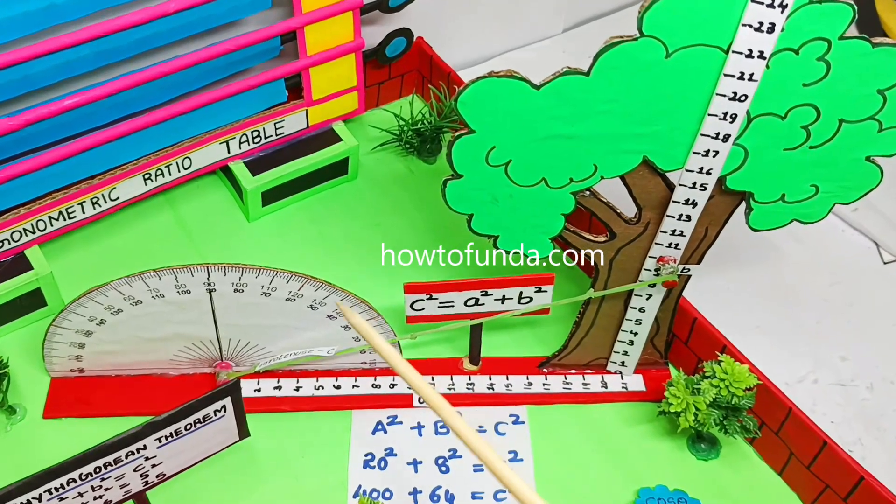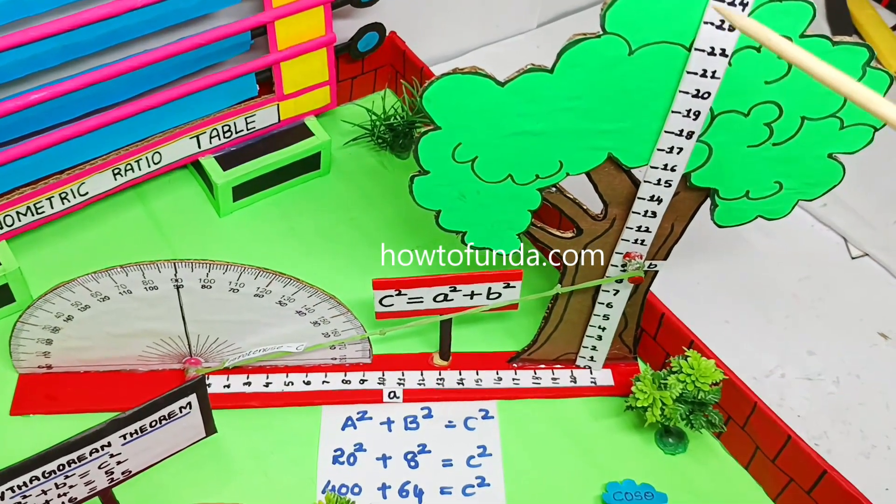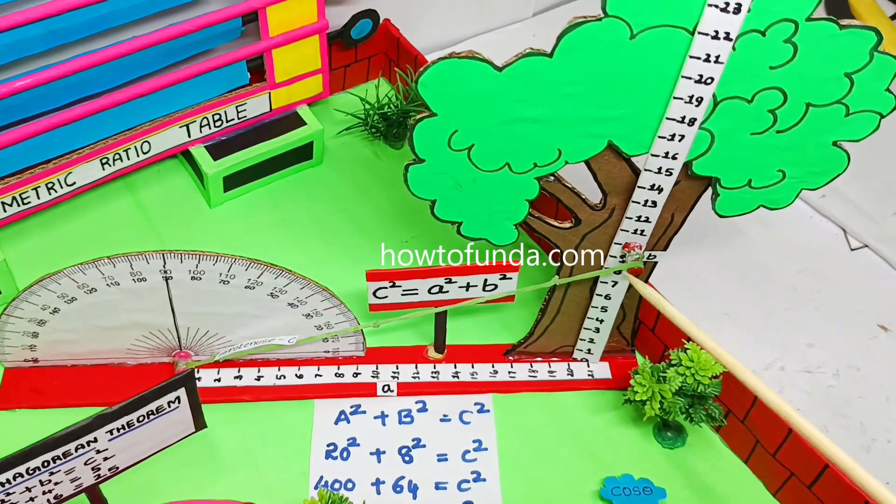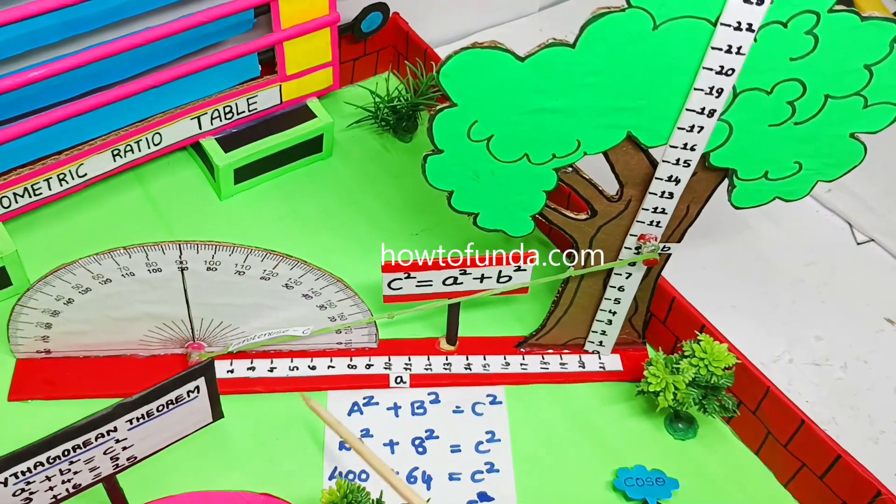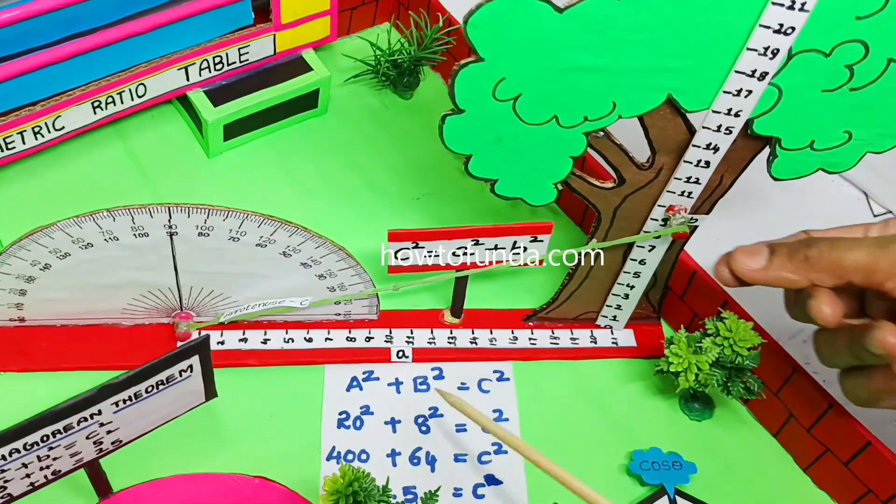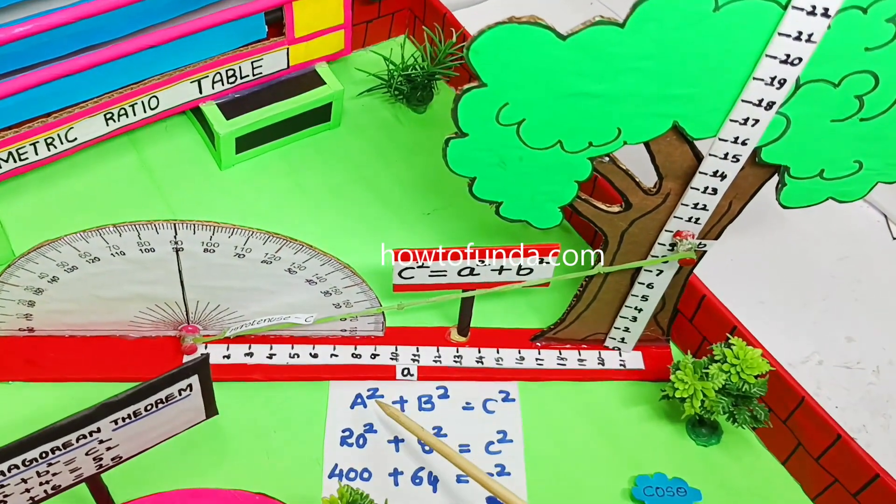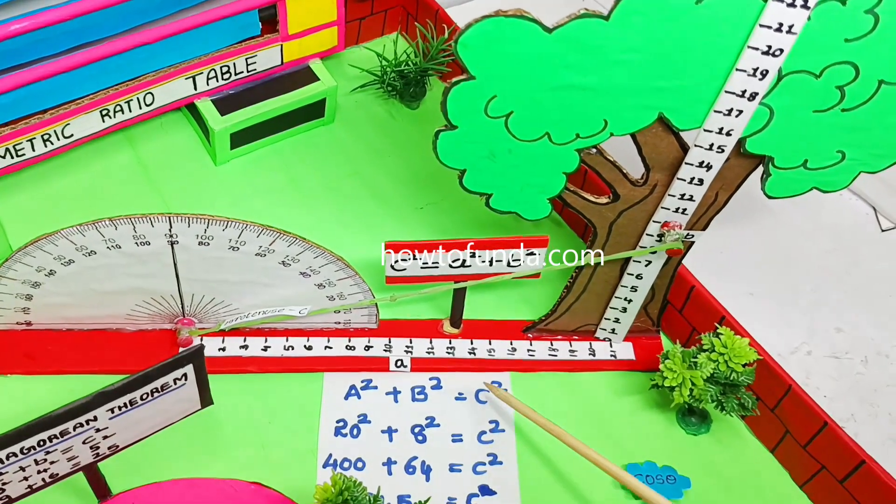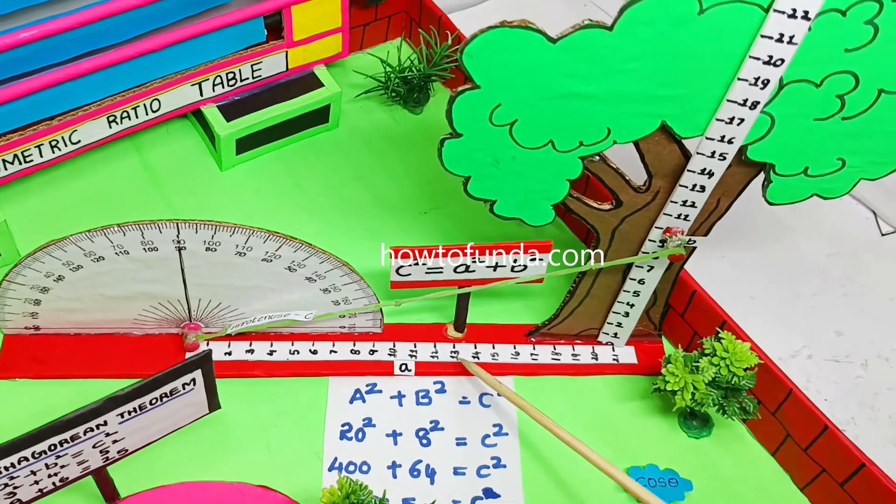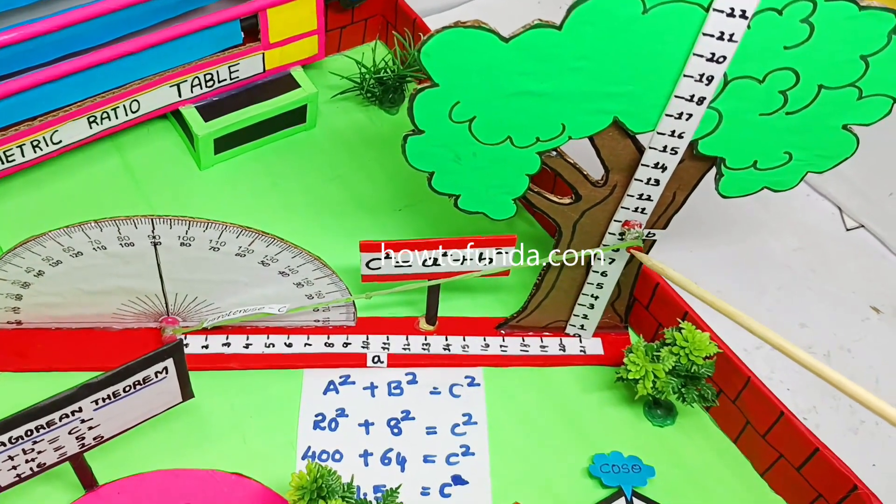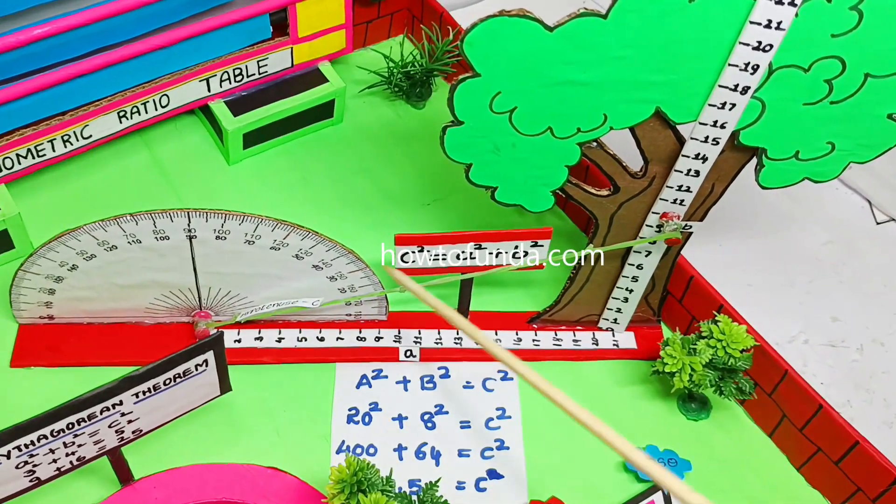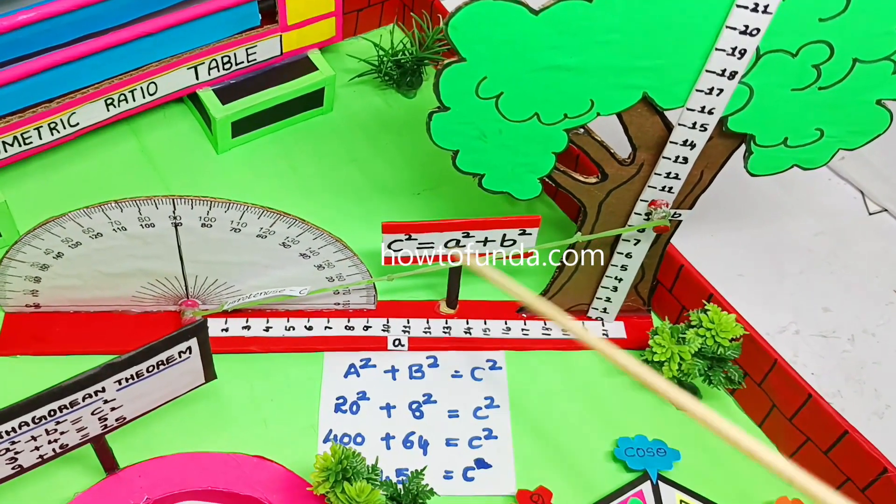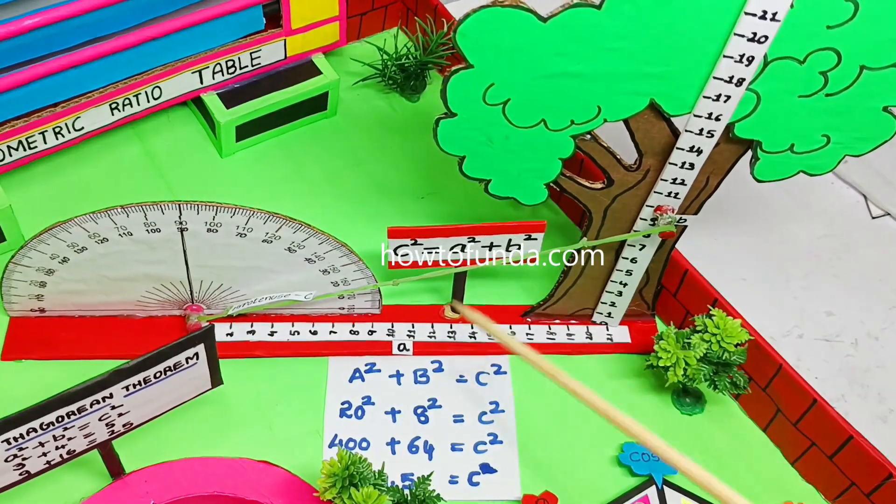We have depicted Pythagoras theorem by measuring the height of the tree, hypotenuse as well as base, by using this simple formula which is Pythagorean theorem: a² + b² = c². That is base² + height² = hypotenuse². That is what the Pythagoras theorem depicts here.